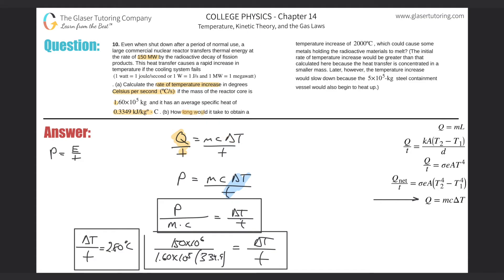Anyway, letter B. How long would it take to obtain a temperature increase of 2,000 degrees Celsius, which could cause some metals holding the radioactive materials to melt? So actually, I mean, I was basically just mentioning how to kind of do it. So we can basically use this same formula here, and we can think about it commonsensically. If this is the, we can just use this particular formula here.